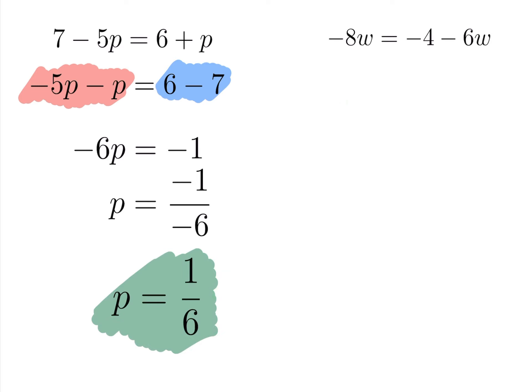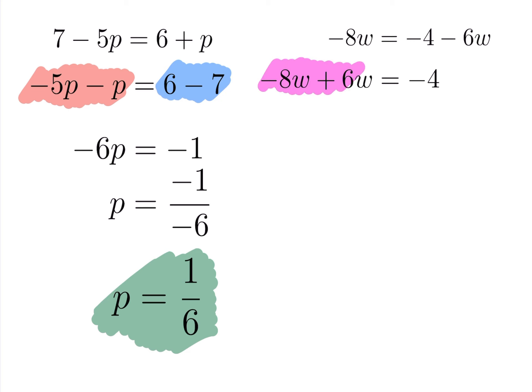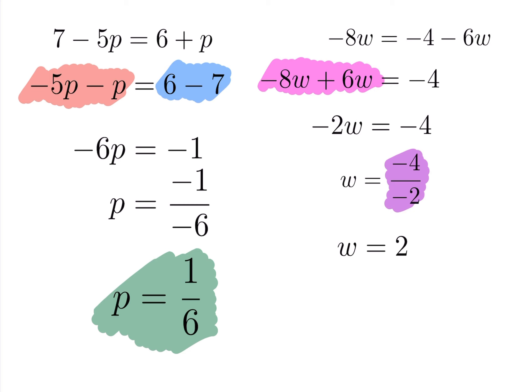For the final problem, we have w on both sides. Add 6w to both sides: negative 8w plus 6w is negative 2w equals negative 4. Dividing across by negative 2 gives w equals 2. That concludes today's lesson on solving linear equations.